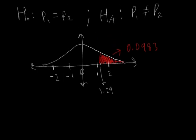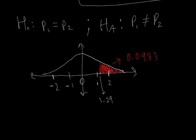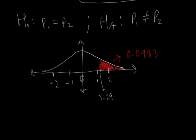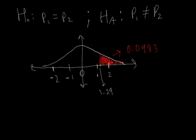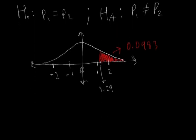Now, if our hypothesis was that P1 is greater than P2, then we would just use this probability right here, which still wouldn't be significant because typically the significance threshold is 0.05, and in this case it's 0.09. Because it's greater than 0.05, we would not be able to reject the null.